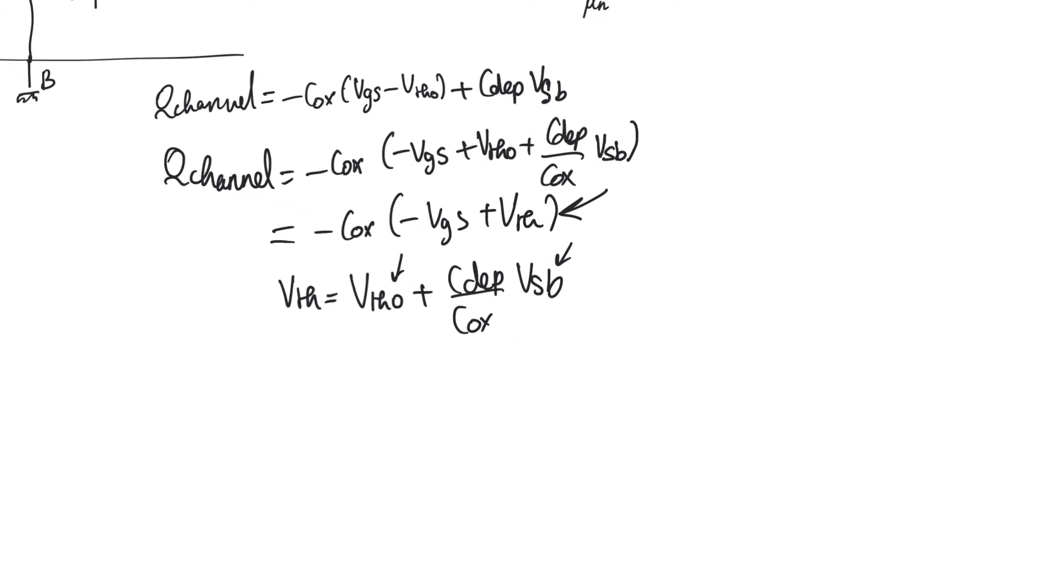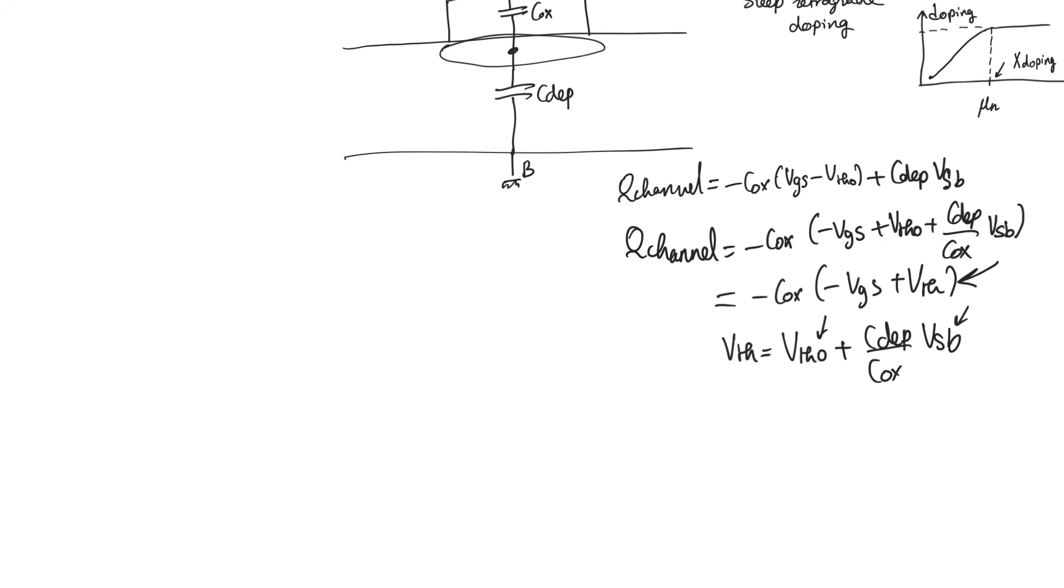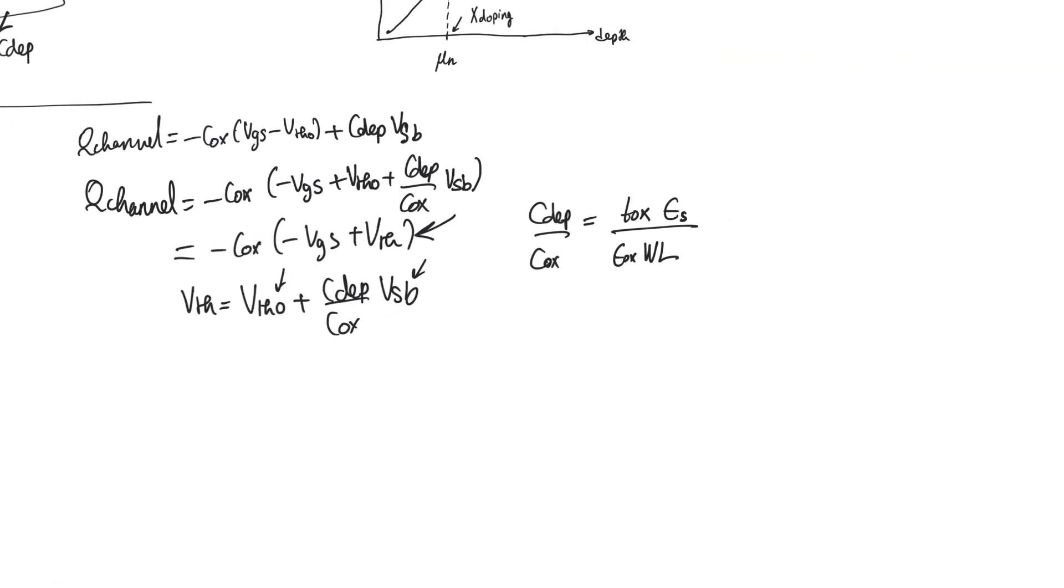Now this amount is controlled by the ratio between C-depletion and C-oxide. So if we write this ratio, C-depletion by C-oxide, C-oxide is epsilon oxide times the area of the channel, which is W over L, divided by T-oxide. C-depletion is epsilon, but in this case the insulator for C-depletion is not oxide. The insulator is depleted silicon, which has the same epsilon as normal silicon. So this is epsilon silicon.